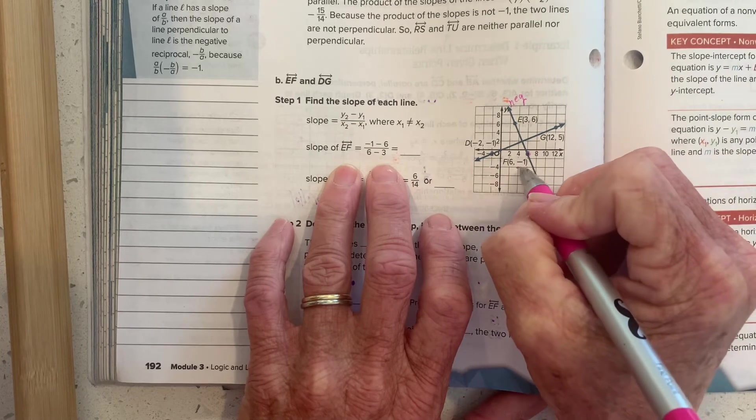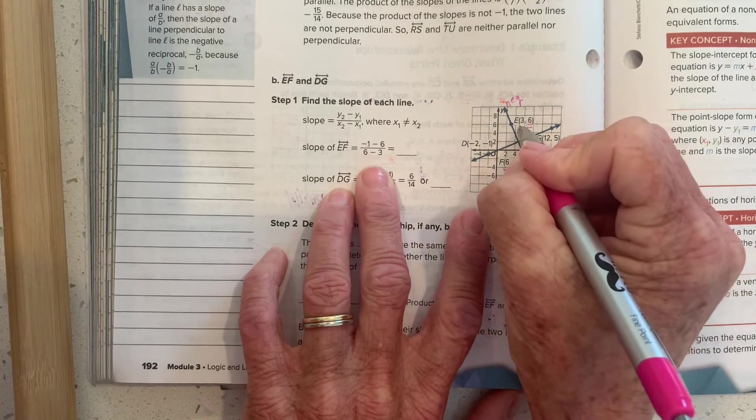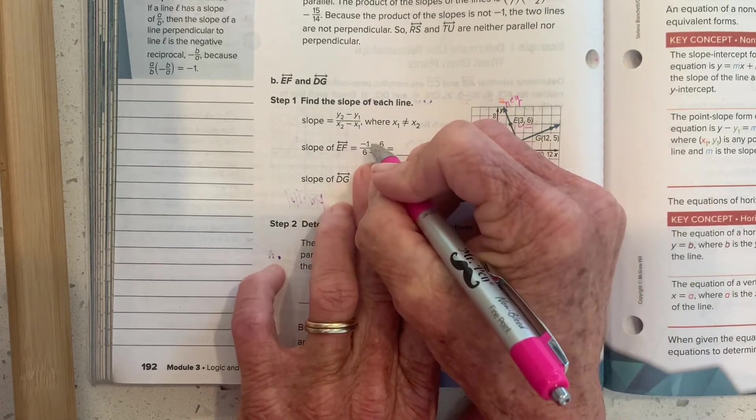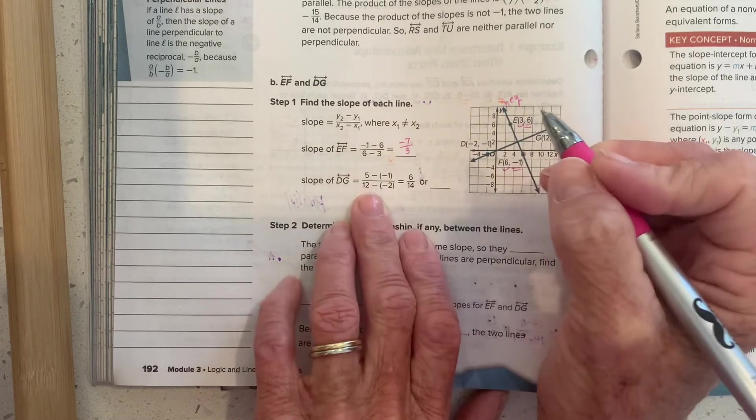But I have y minus y, negative 1 minus 6, and then x minus x in the same order. Negative 1 minus 6 is negative 7. 6 minus 3 will give us positive 3.